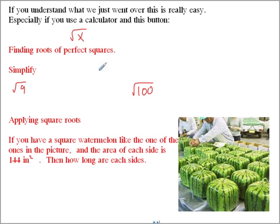So if you understand what we just went over, it's really easy, especially if you can find this button on the calculator. Finding the roots of perfect squares, all you do is simplify. What is the square root of 9? The square root of 9 is 3, because 3 times 3 equals 9.